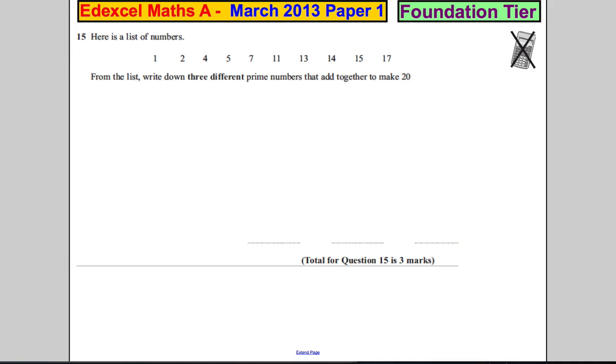Question 15: Here is a list of numbers. From the list, write down three different prime numbers that add together to make 20. So key information: three numbers, they must be different, they must be prime, and they must add to 20. You really need to know your list of prime numbers. If you know your primes, it's probably the easiest way of doing this.